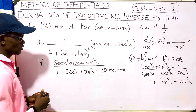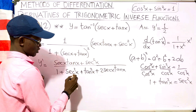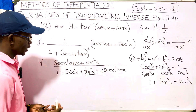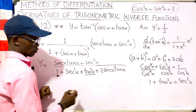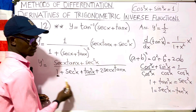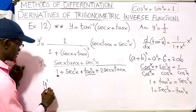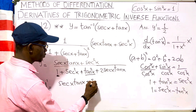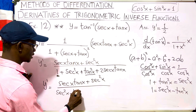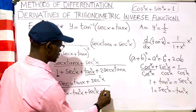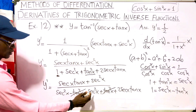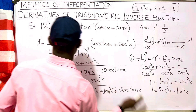We can replace secant squared with tangent squared plus one, or replace tangent squared with secant squared minus one, or replace the 1 with secant squared x minus tangent squared x. Let's choose that last option: replace the 1 in the denominator with secant squared x minus tangent squared x. So the denominator becomes secant squared x minus tangent squared x plus secant squared x plus tangent squared x plus two secant x tangent x. The tangent squared x terms cancel out.